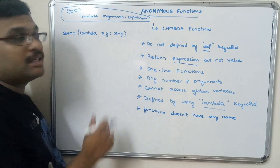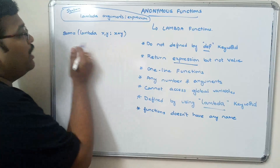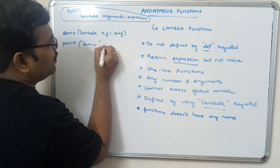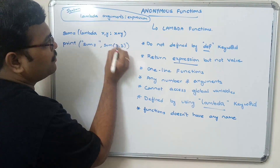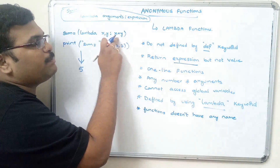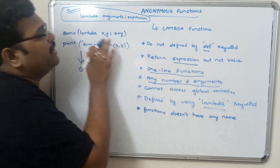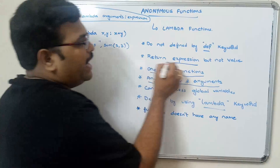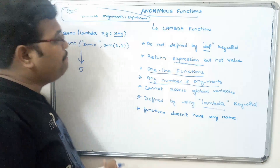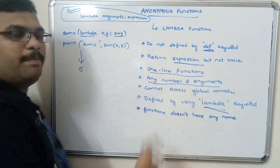The arguments are written separated by commas. So sum = lambda x, y: x + y, and we can simply call print(sum(2, 3)), which will automatically give the result as 5. Here x and y are the arguments and x + y is the expression. That's why we call it a one-line function, and we can have any number of arguments.